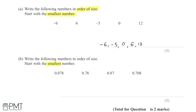I'm going to be looking at the decimal places here. For the first decimal place of each number, we have a zero, a seven, an eight, and another seven. In order to find the smallest number we're looking for the smallest first decimal place, which is zero here — so zero point zero seven eight is going to be the smallest.